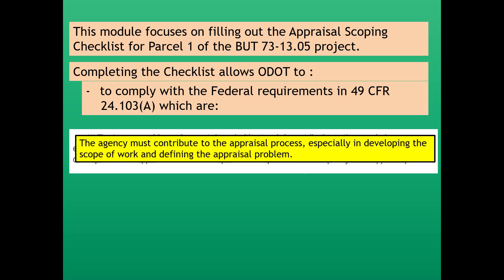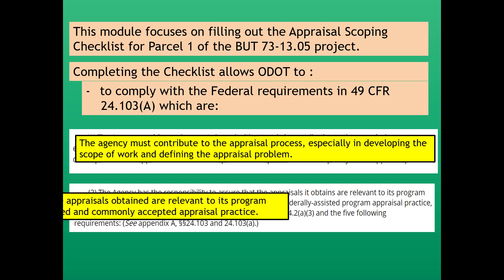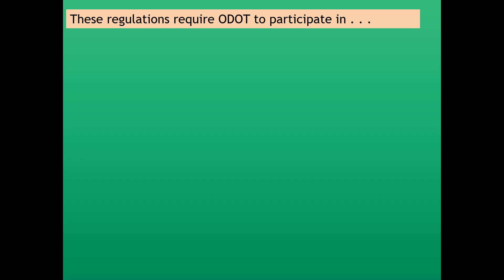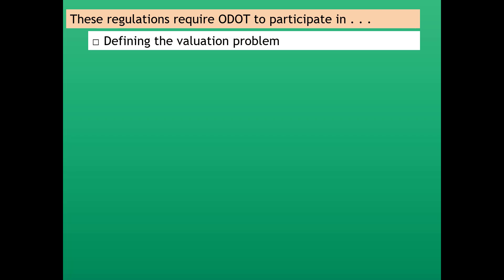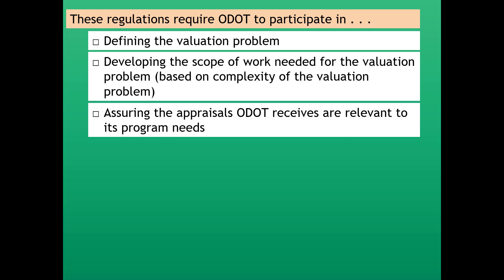The agency must contribute to the appraisal process, especially in developing the scope of work and defining the appraisal problem. The agency also has the responsibility to assure that the appraisals it obtains are relevant to its program needs, reflect established and commonly accepted federal and federally assisted program appraisal practice, and at a minimum comply with the definition of appraisal in 24.203a3 and the five following requirements. These regulations require ODOT to participate in defining the evaluation problem, developing the scope of work needed based on the complexity of the evaluation problem, and assuring that the appraisals ODOT receives are relevant to its program needs.